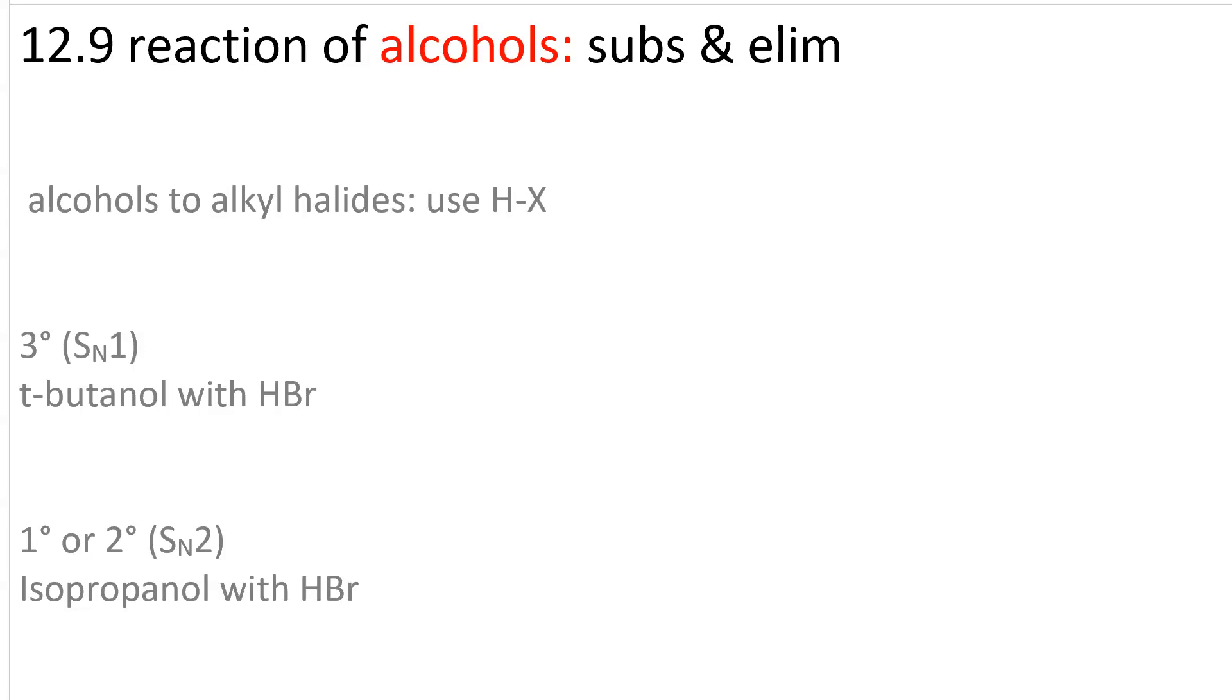Substitution and elimination reactions of alcohols. Remember, hydroxide is a very poor leaving group. If we use a halo acid - HCl, HBr, or HI - we will first protonate the hydroxide to make water, which is a good leaving group, and the halide ion that's generated in the proton transfer step then acts as a nucleophile.